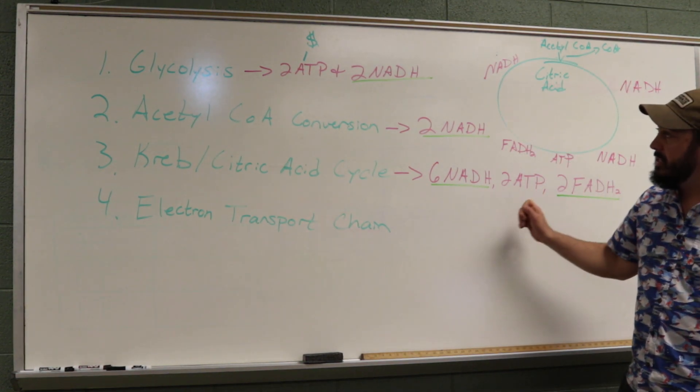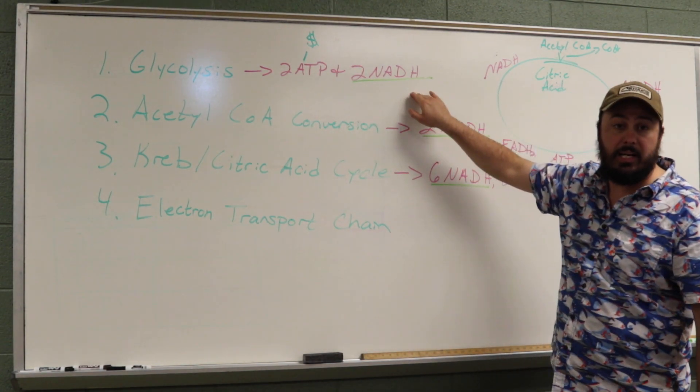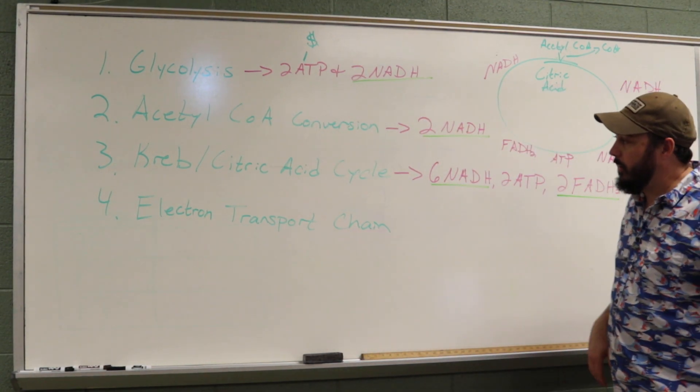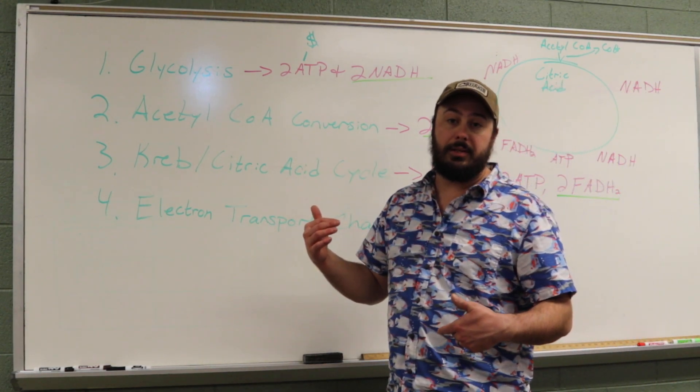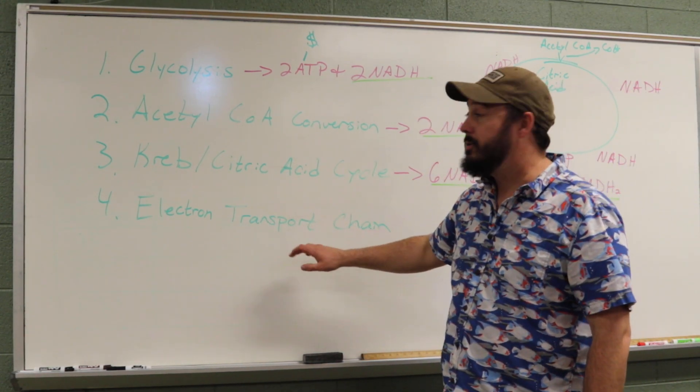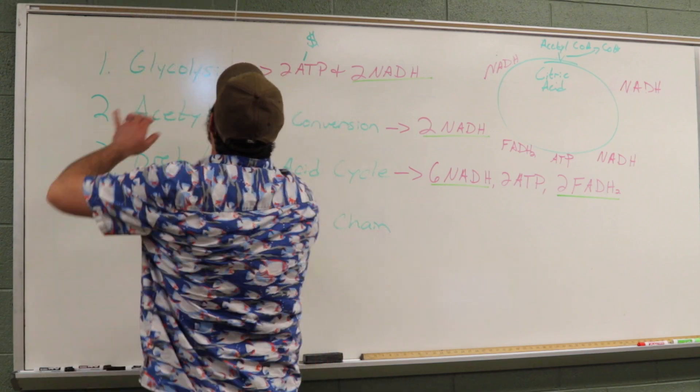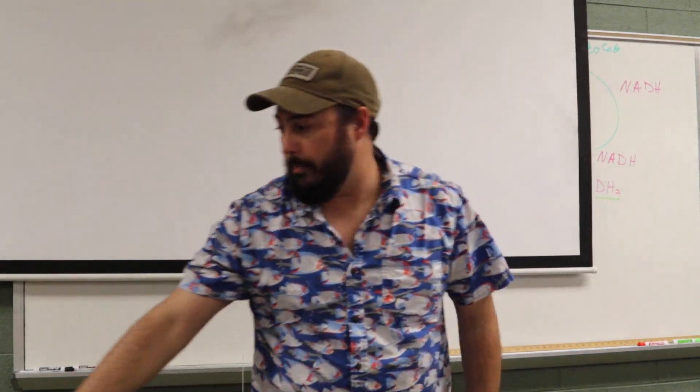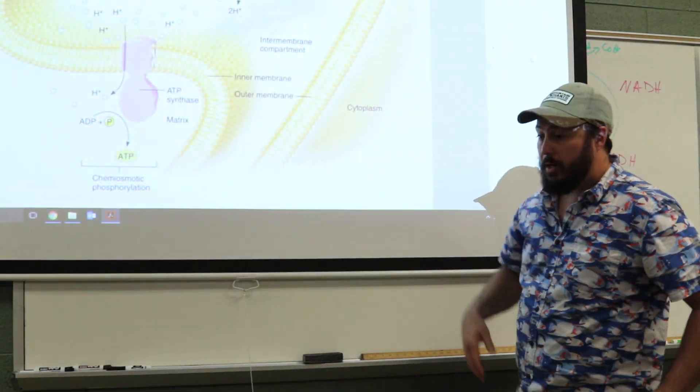Remember, ATP is like the money. NADH is like the debit card. FADH2 is like the credit card. So, now we have to go down to the next spot, which is the electron transport chain. I'm going to use an image from your textbook that describes it a little bit better than I can. This is the electron transport chain.